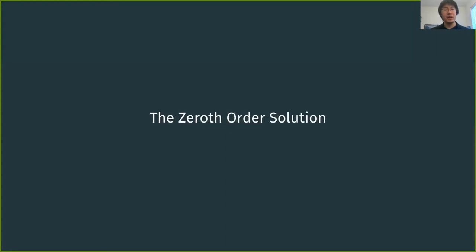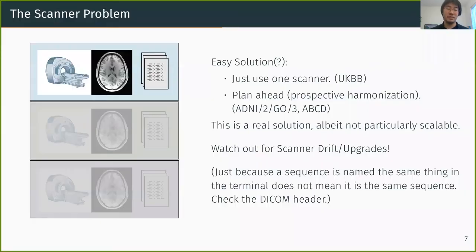Of course, the easiest solution, the zeroth-order solution, is to not have harmonization problems at all. So, only use one scanner, or plan ahead. This doesn't reduce all of your variation, but as UK Biobank and ADNI have shown that this can help you a lot by getting everybody on the same page. Or even in UK Biobank's case, only using one site and two closely paired scanners. Yeah, so if you can do this, do it. But if you can't, linear site effects.